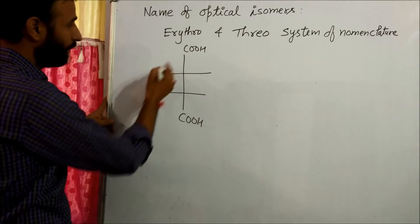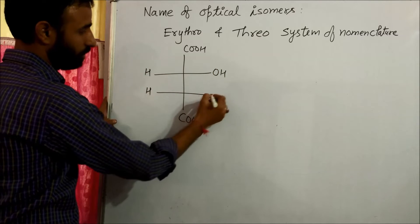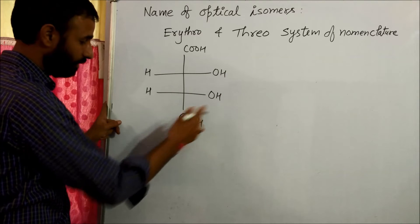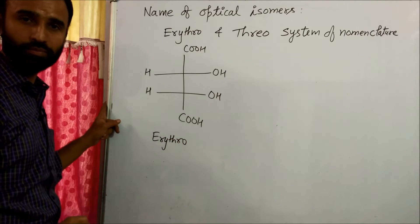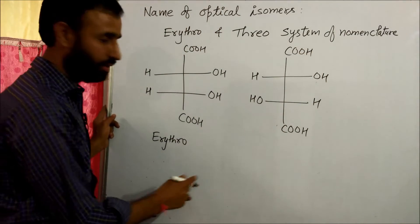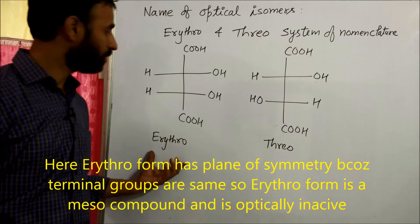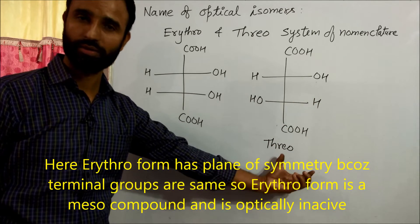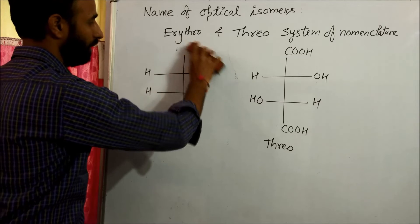For example, take tartaric acid — COOH, COOH, OH, OH. If similar groups are on the same side in the Fischer projection, that is called erythro. If similar groups are on different sides, that is called threo. In this case, the erythro form is a meso compound, and the threo form is an enantiomer.